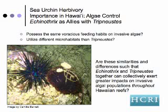We hypothesize that Echinothrix and Tripneustes working together could collectively exert greater impacts on invasive algae, particularly if there are differences in the distribution patterns between these two species.